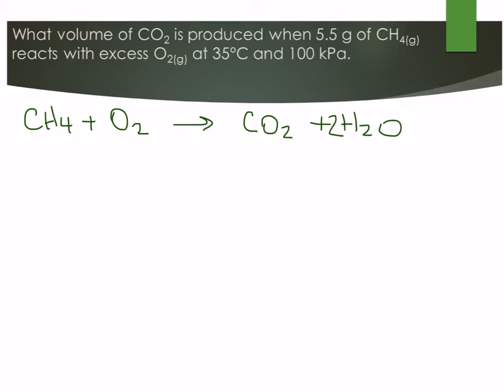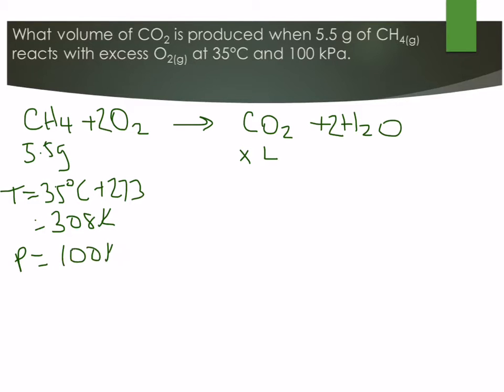Then we need to balance for the hydrogens and then for the oxygens. We have 5.5 grams. We're being asked to figure out how many liters of carbon dioxide and we have a temperature of 35 degrees Celsius which we're going to convert to Kelvin. So we get 308 degrees Kelvin and we have a pressure of 100 kilopascals.